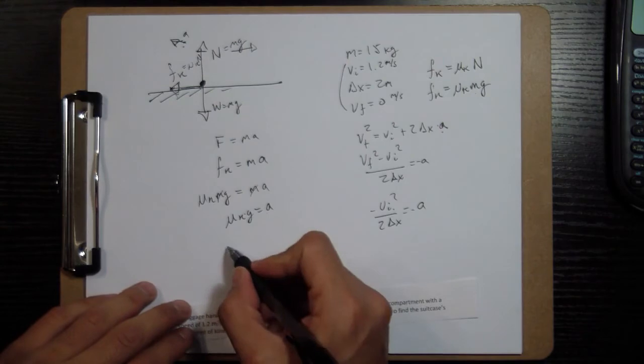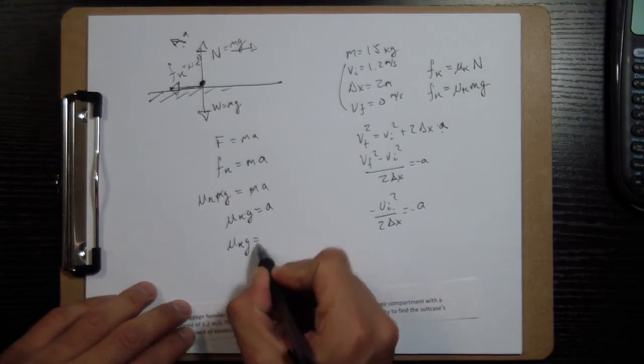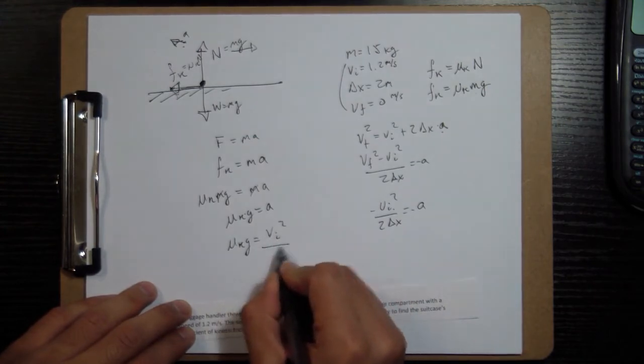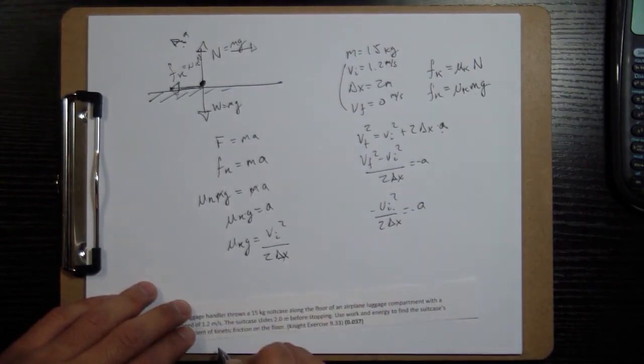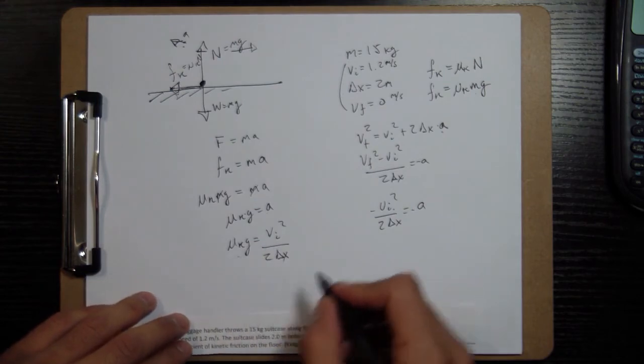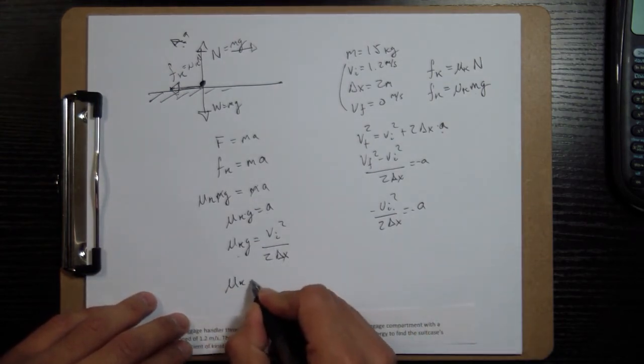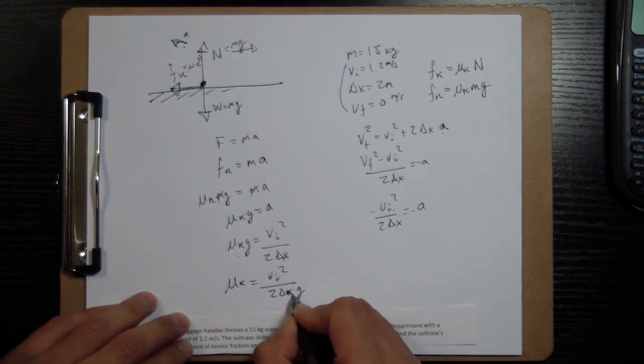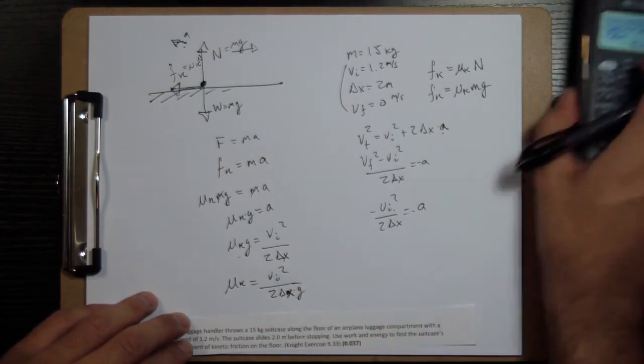But over here, when I plug it in, I need to plug it in as a positive so for the signs to work out. v initial squared over 2 delta x. And last thing is, I want to get mu k by itself, so I'll divide by g. So mu k equals v i squared over 2 delta x times g. And we get a number for that.